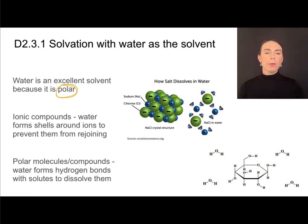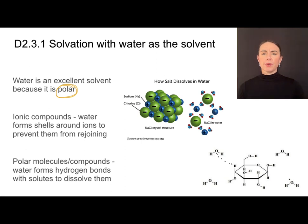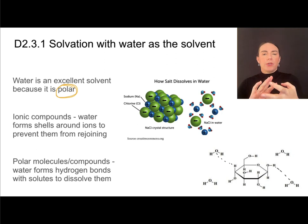With polar molecules or polar compounds, water forms hydrogen bonds around them to dissolve them. With glucose, hydrogen bonds form between the oxygen of the water and the hydrogens sticking off the glucose molecule. Water is partially charged and therefore attracted to the partially charged or polar glucose molecule.